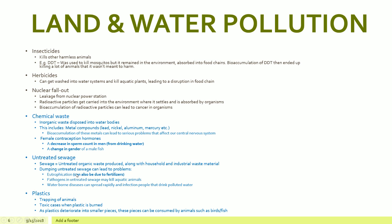Untreated sewage — we always treat sewage and there's a good reason for that. Sewage is basically untreated organic waste produced along with household and industrial waste material. Dumping untreated sewage can lead to serious problems such as eutrophication — which can also be caused by fertilizers — pathogens and disease-causing bacteria that may kill aquatic animals, and waterborne diseases that spread rapidly and affect people who drink polluted water. The dumping of plastics is also a problem — animals get trapped by plastics, toxic gases are released when plastics are burned, and as plastics deteriorate into small pieces they can be consumed by birds and fish, causing problems in their bodies.